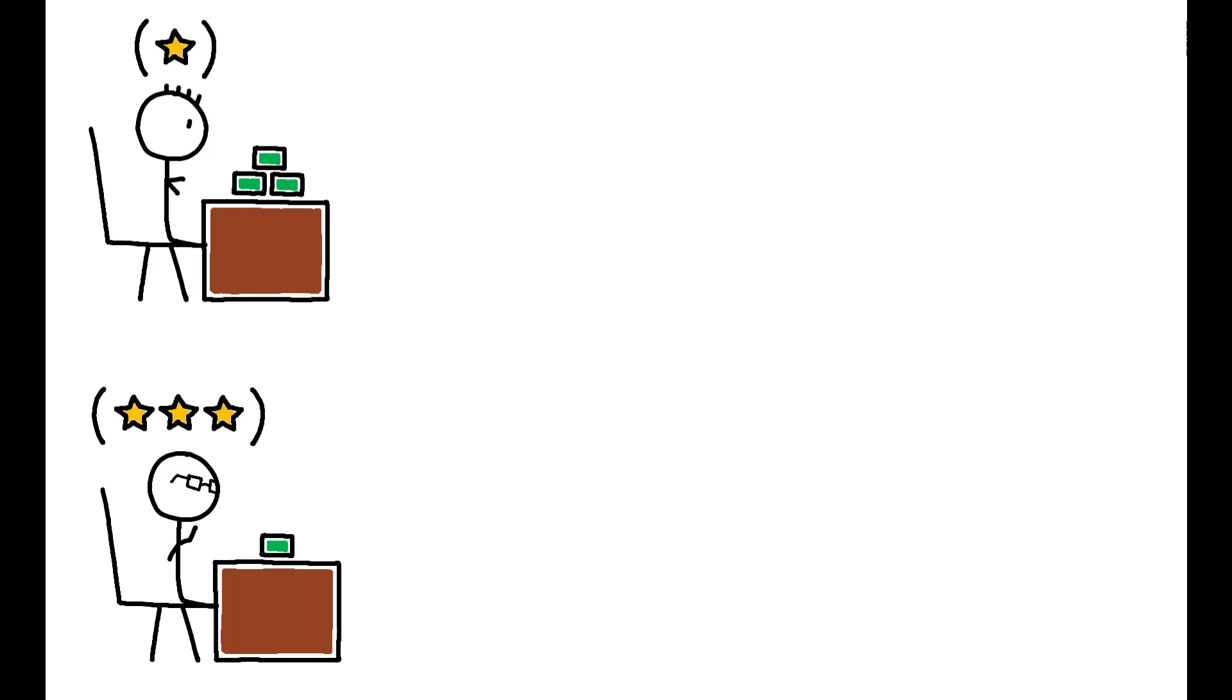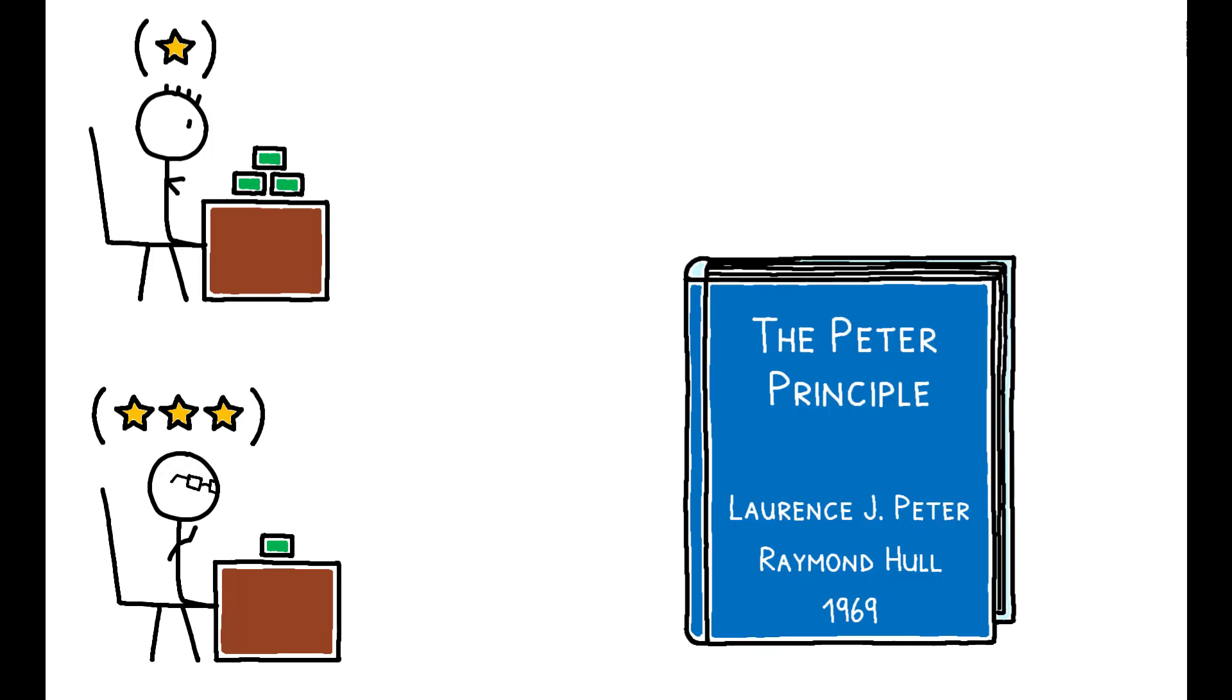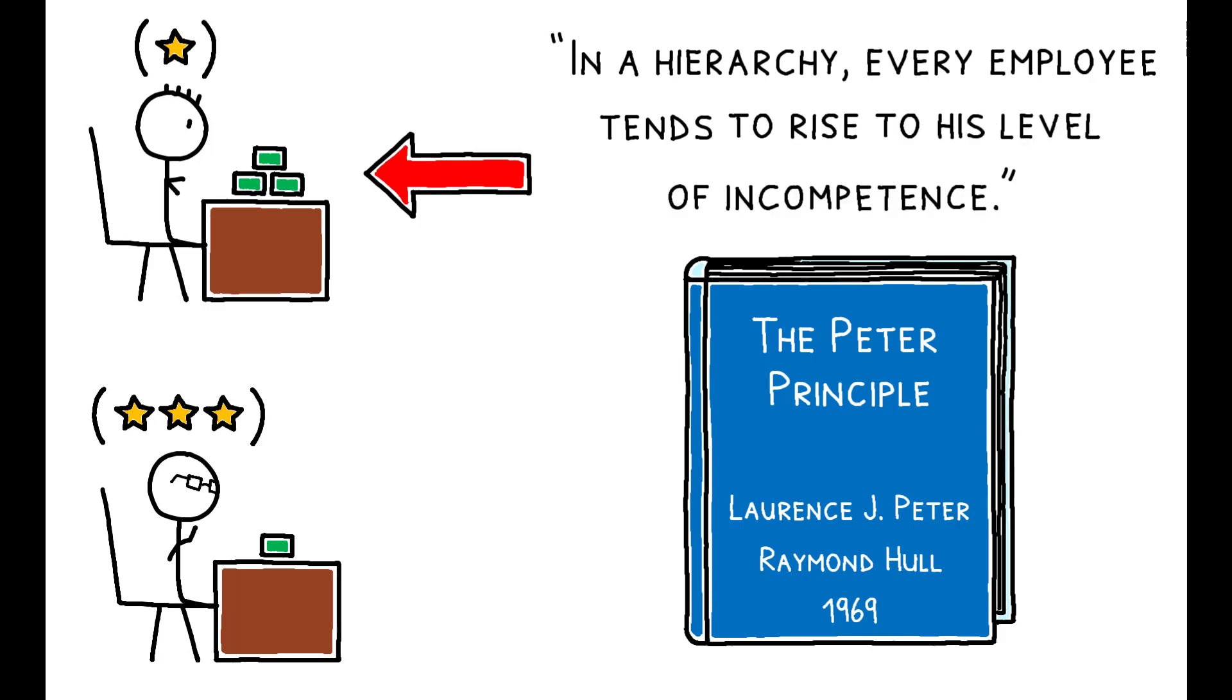One hypothesis, first introduced in 1969 and broadly known as the Peter Principle, is that firms prioritize current performance in promotion decisions at the expense of promoting the best potential managers. In other words, in a hierarchy, every employee tends to rise to his level of incompetence.